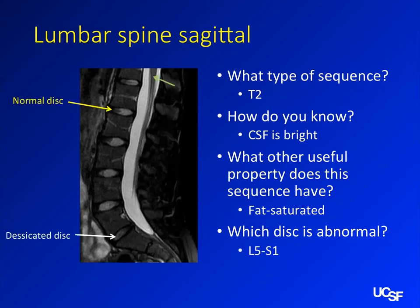The conus should be at L1-L2 or above in adults. There is some variation, but if the conus is below the L1-L2 disc level that's abnormal. It tends to be lower in children and gradually rises over time. By adulthood you shouldn't be seeing the conus in the lumbar spine — if you are, you should be thinking about a tethered cord.